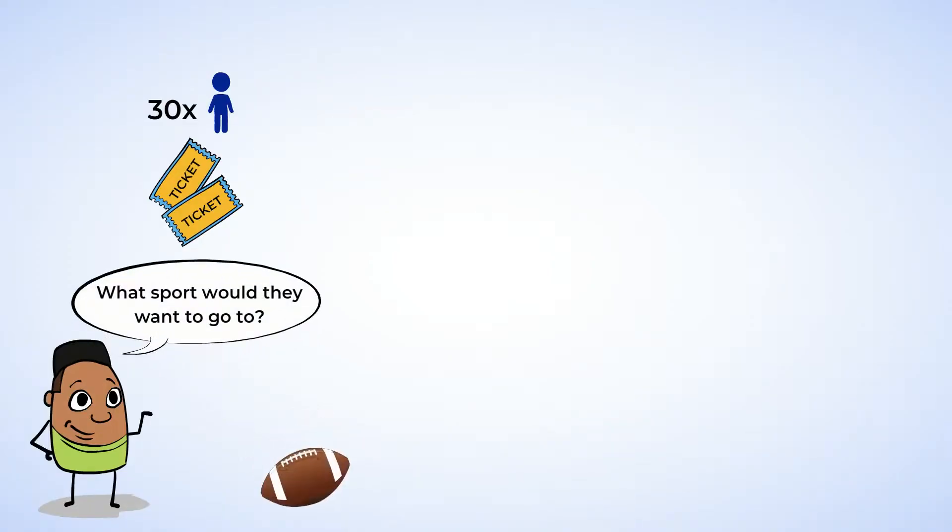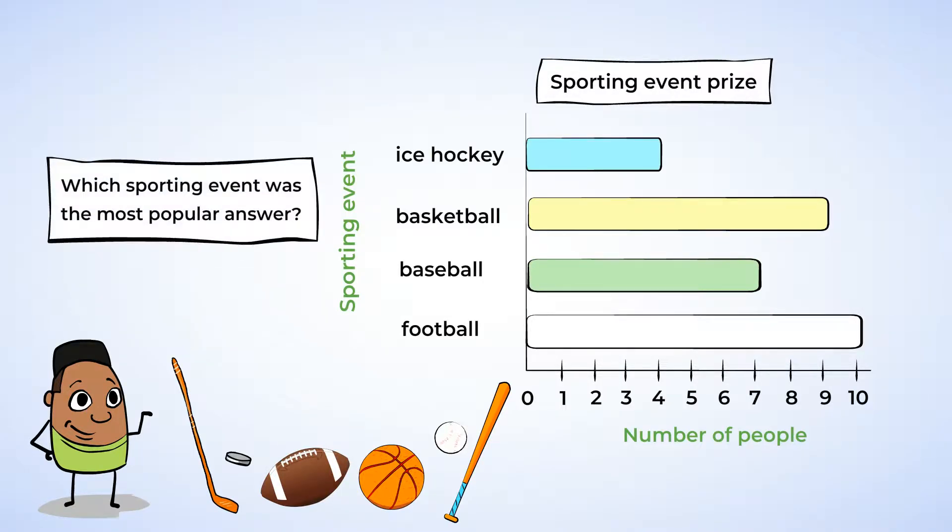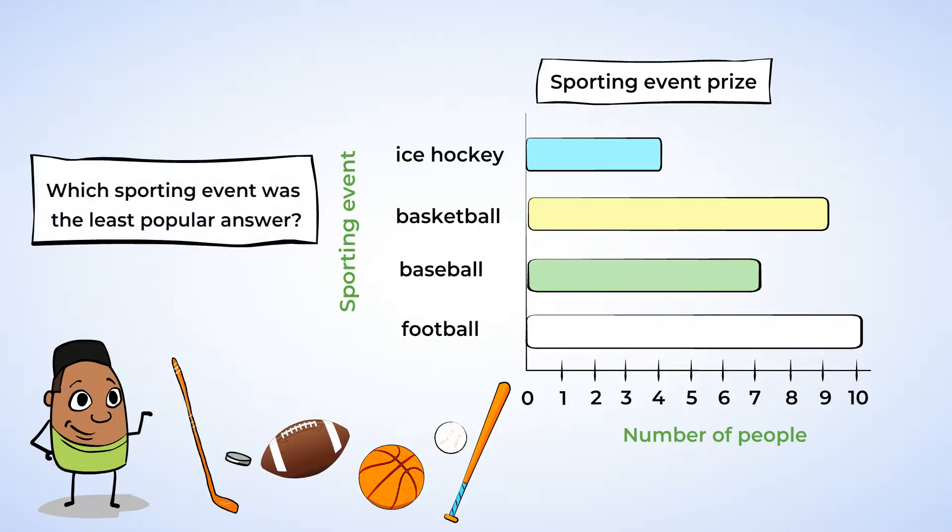What do you say we check out one more thing on the survey? 30 people were asked if they could win tickets to any major sporting game, what sport would they want to go to? Football, baseball, basketball, or ice hockey. And here are the results. Take a careful look at this graph and see if you can tell me which sporting event was the most popular answer. Well, we can see without looking at any numbers that football was the most popular answer since it is the longest bar. And which sporting event was the least popular answer? We can also see without looking at any numbers that ice hockey was the least popular answer since it is the shortest bar.